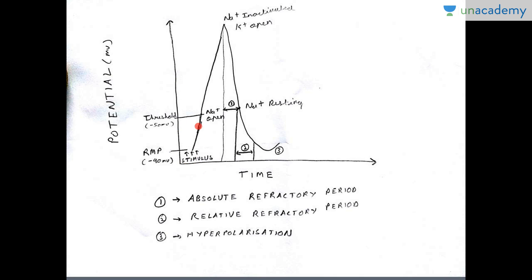At rest, the sodium channel's activation gate is closed and the inactivation gate is open. As the membrane potential goes above the threshold, the sodium channel gets activated — the activation gate opens and the inactivation gate remains open. Sodium then starts coming into the membrane. Sodium moves in because its concentration is higher in the extracellular fluid than in the intracellular fluid, so it moves along its concentration gradient.